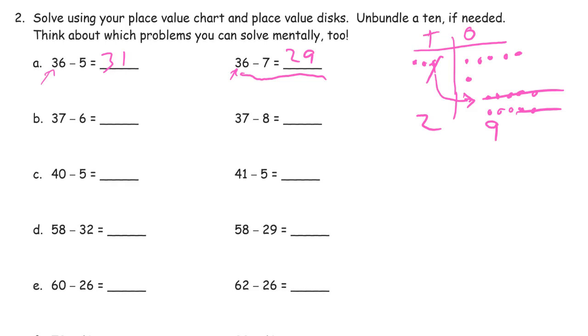37 minus 6 — you see, 7 minus 6 is 1, so it's 31.